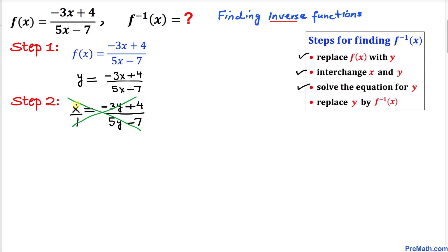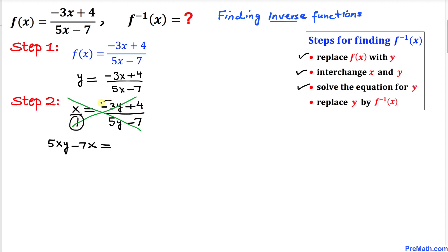Once we cross multiply, the left hand side gives us x times the whole thing: 5xy minus 7x. Crossing the other way, 1 times the right side gives us negative 3y plus 4.